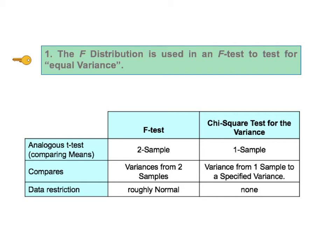But there is a data restriction. In order to perform an F test, the data from the two samples must be roughly normally distributed.